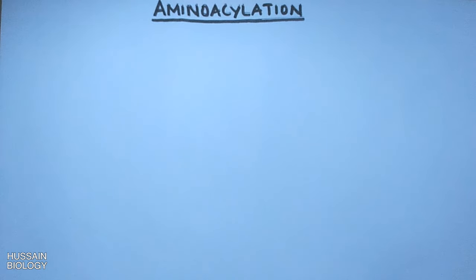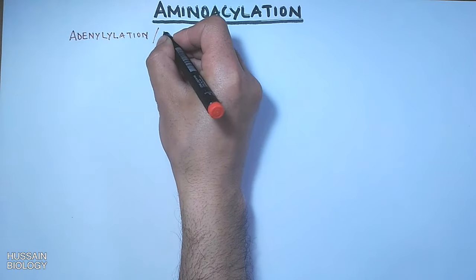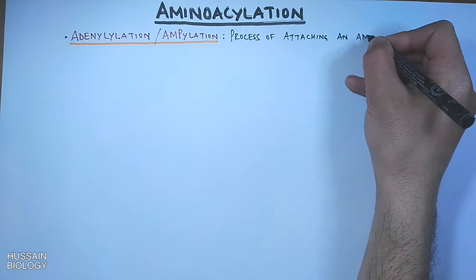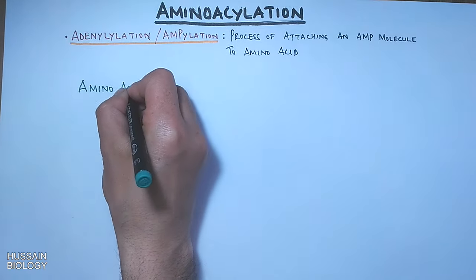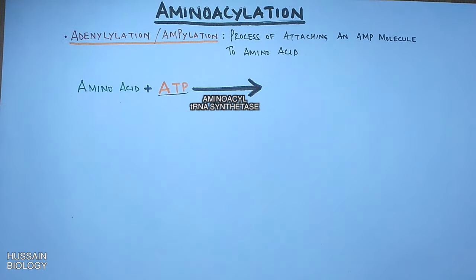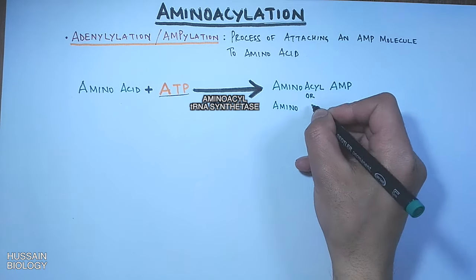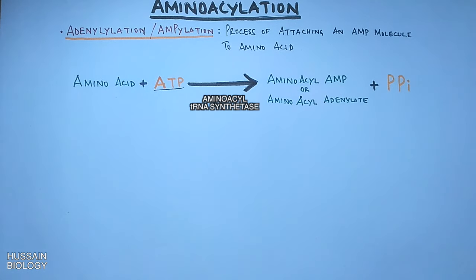Aminoacylation is the addition of an aminoacyl group to the tRNA. We break the aminoacylation reaction into two steps. The first reaction is adenylation, which is the process of attaching an AMP molecule to the amino acid. In this reaction, the amino acid and ATP react in the presence of aminoacyl tRNA synthetase enzyme, producing aminoacyl-AMP (aminoacyl adenylate) and two inorganic pyrophosphates.